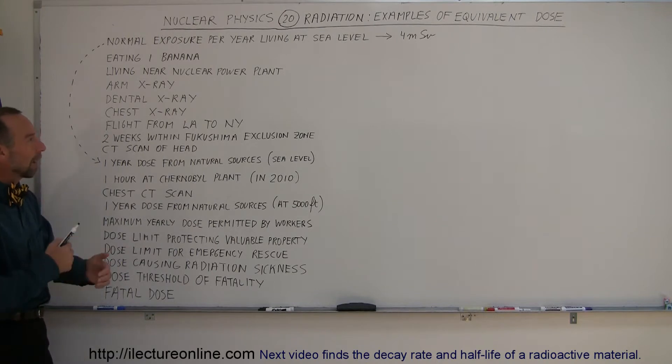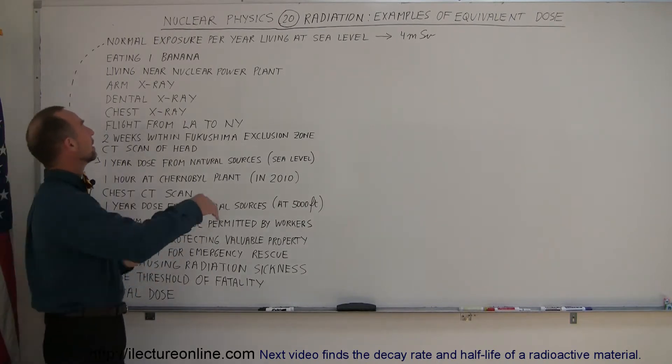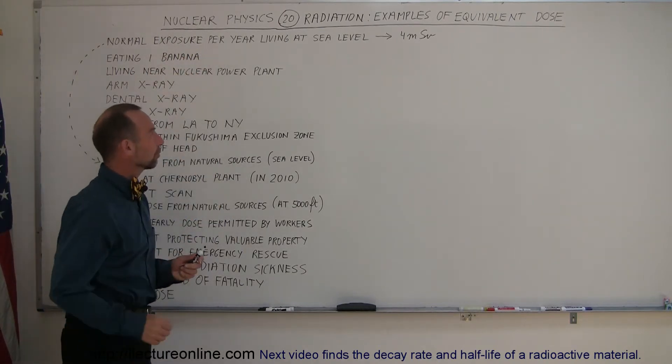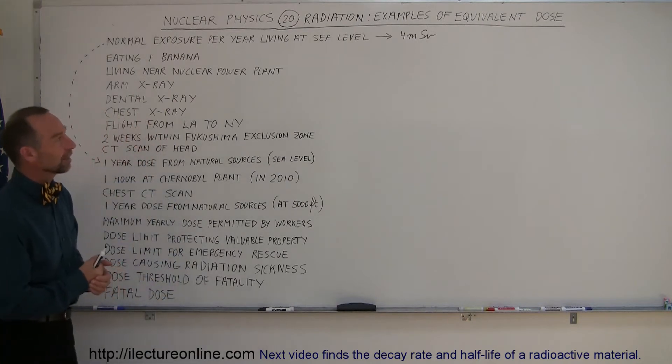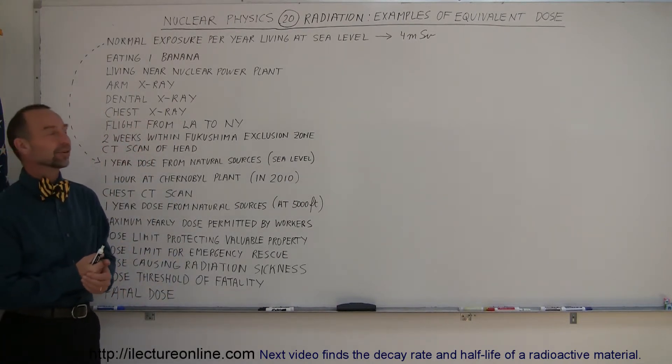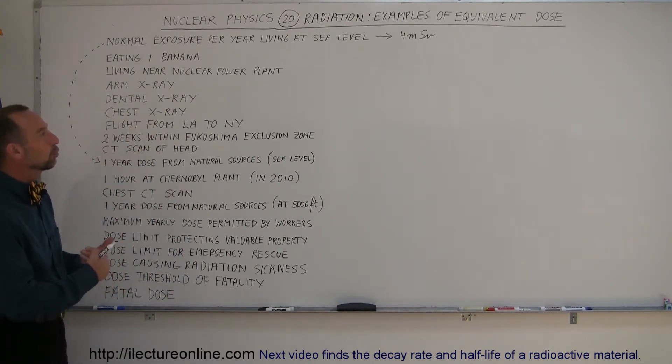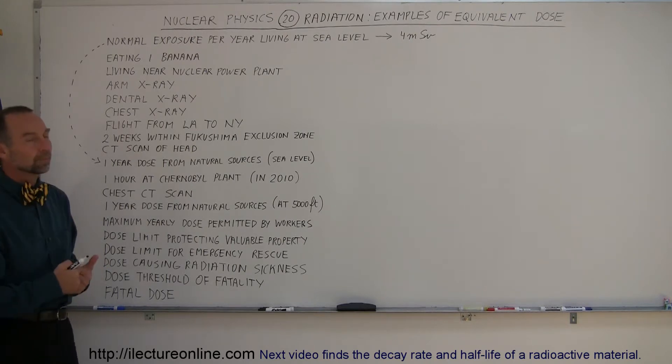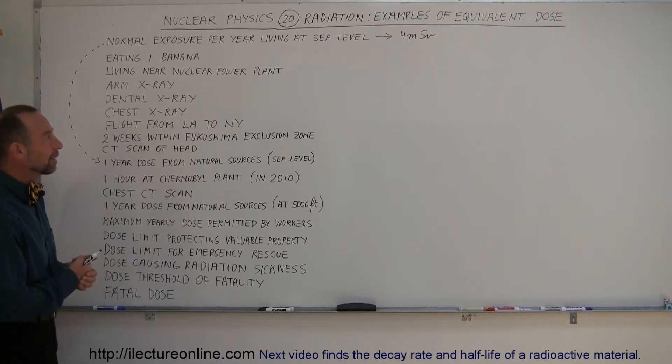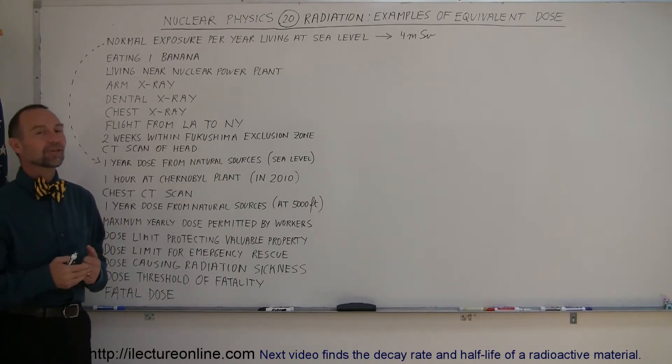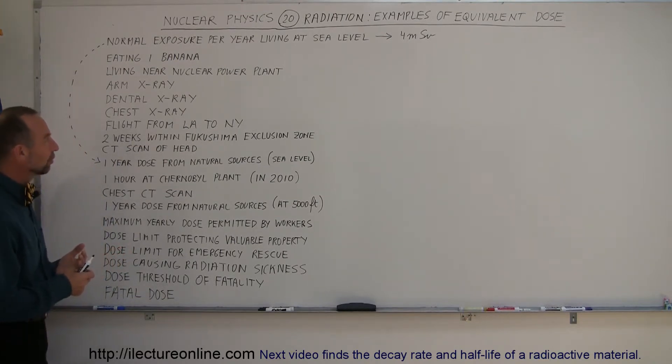To give you a feel for how we can compare things, the typical exposure of a person living on the Earth at sea level is about 4 millisieverts of equivalent dose of radiation. Since all of us live a lifetime without any problems with that, 4 millisieverts is considered a very safe limit. Don't worry about the natural causes of radiation.